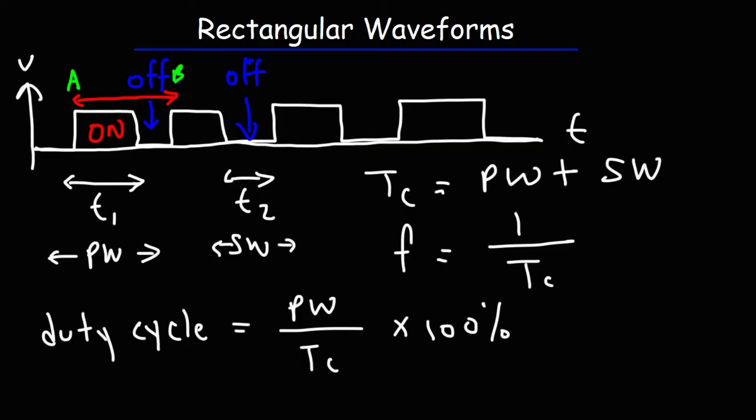Now let's work on some example problems. So let's say that we have this particular rectangular waveform. By the way, at a duty cycle of 50 percent the rectangular waveform becomes a square wave. Actually let me draw a different one.